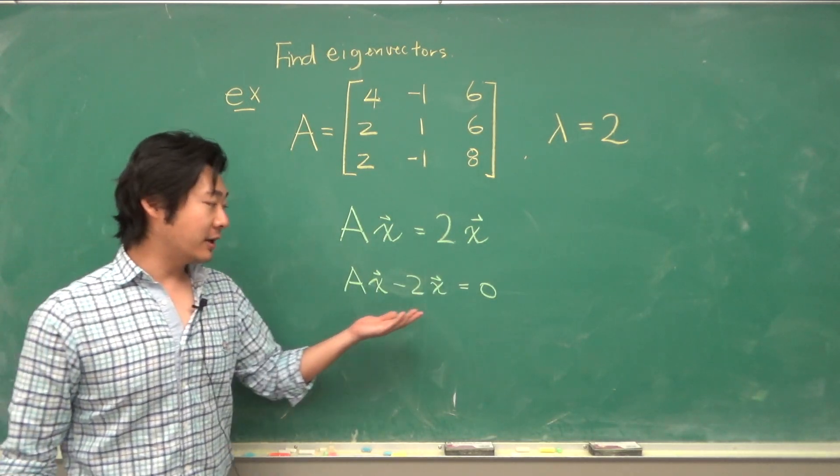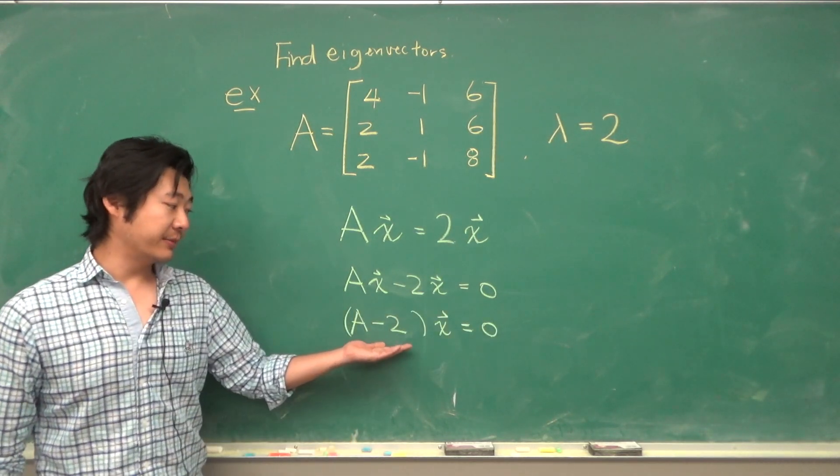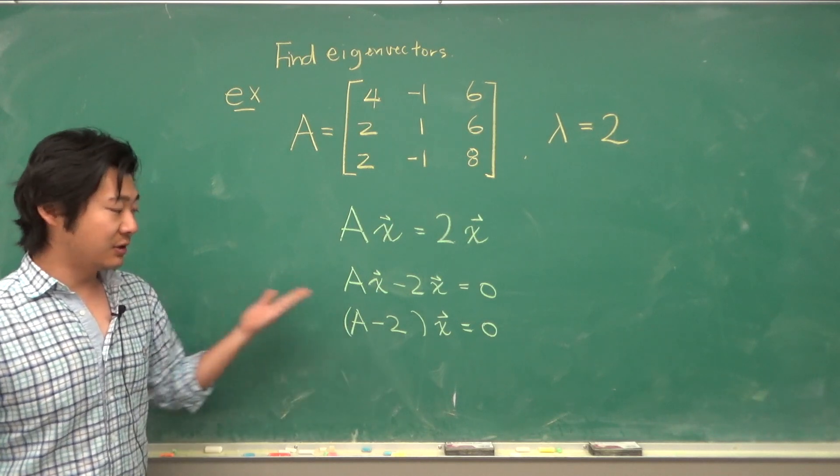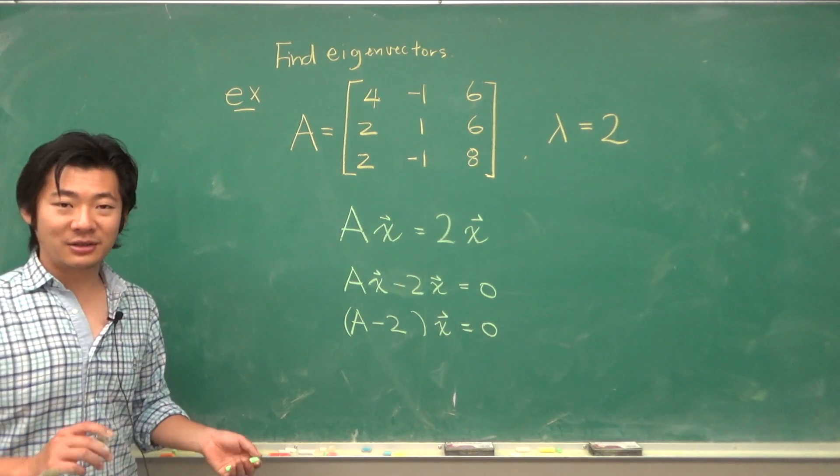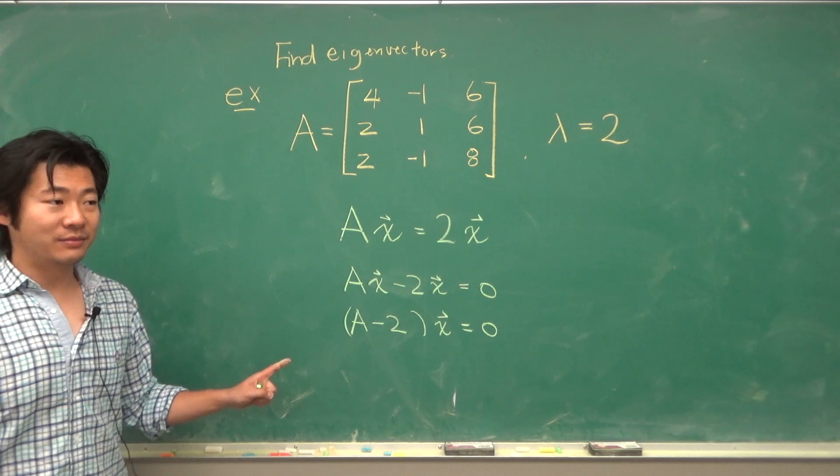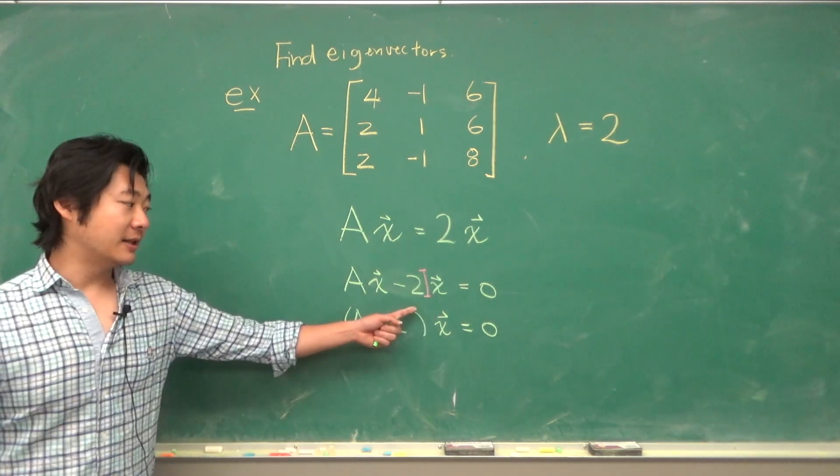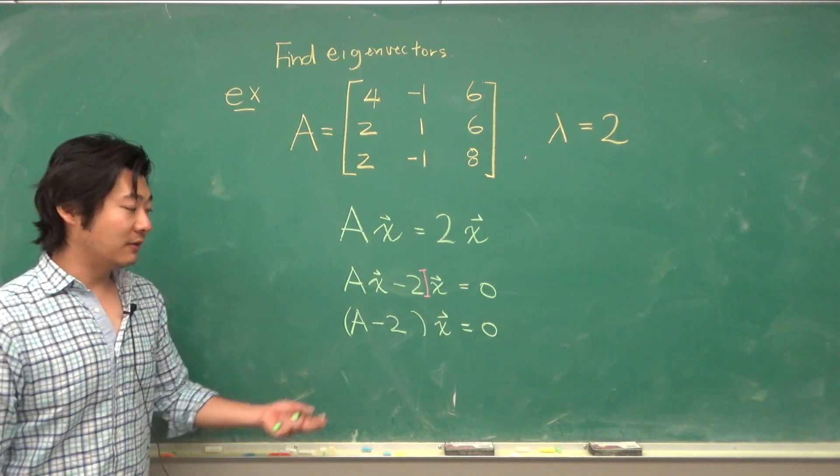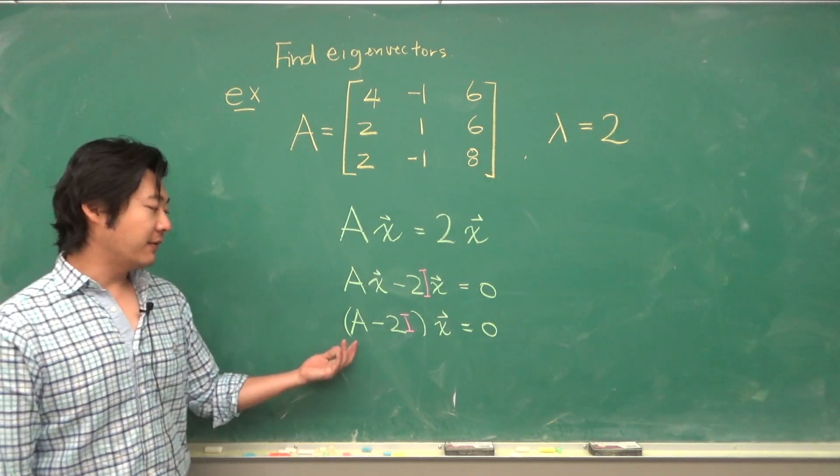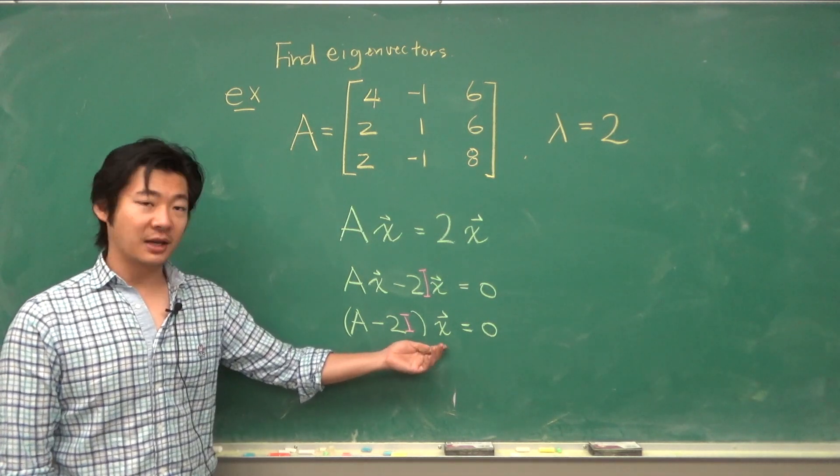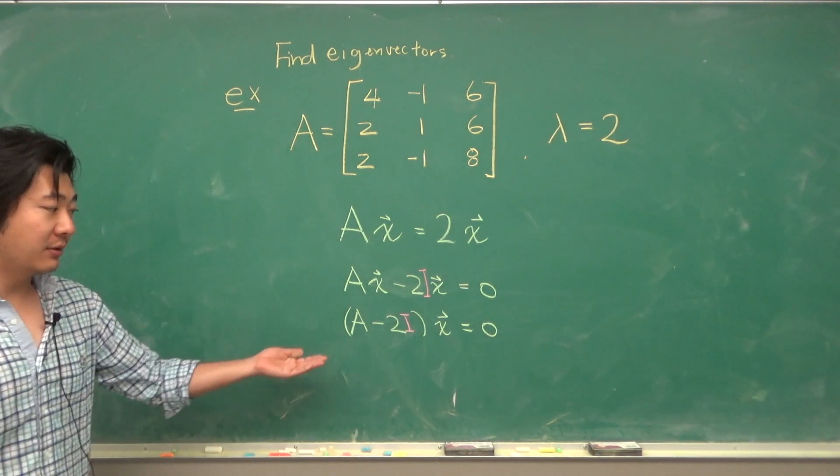If we want to factor out an x, well, we could consider something like this, but this doesn't really make sense because A is a matrix, 2 is a number. You can't really subtract 2 from a matrix, so we need to make some adjustments first. Namely, if we multiply this by the identity matrix, then we can factor out an x. So then we have A minus 2 times the identity, which is a matrix, times x equals 0. And we want to solve this equation.